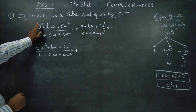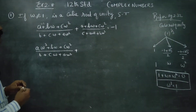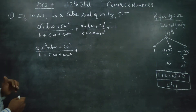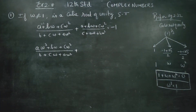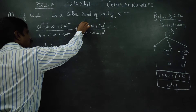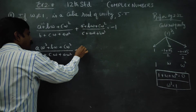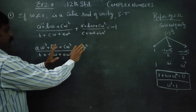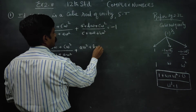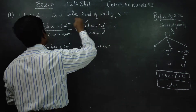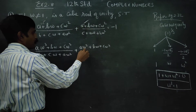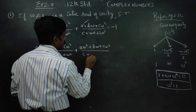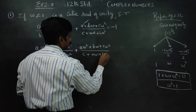In Stage 2, I am going to use A·ω³ again. The expression becomes A·ω³ plus B·ω plus C·ω², divided by C plus A·ω plus B·ω².